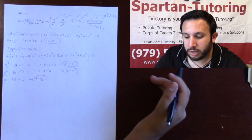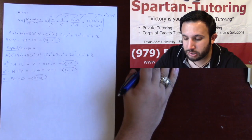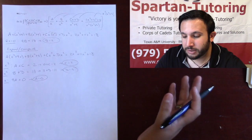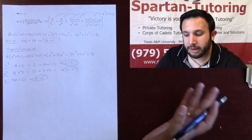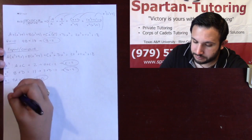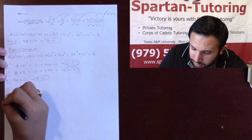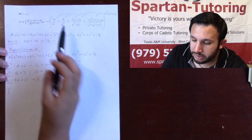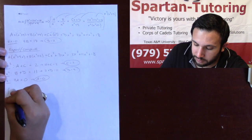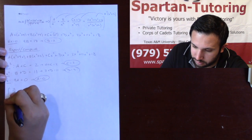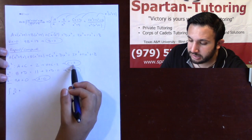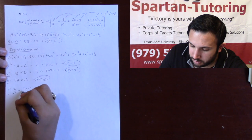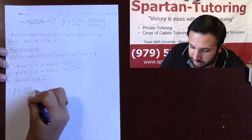Now that I have A, B, C, and D, I can integrate. A is 0 so I don't have to worry about that term. B is 2, so I have 2 over x squared. Then Cx plus D gives 2x plus 9, all over x squared plus 9. So the integral is: 2 over x squared plus 2x plus 9 over x squared plus 9, dx.